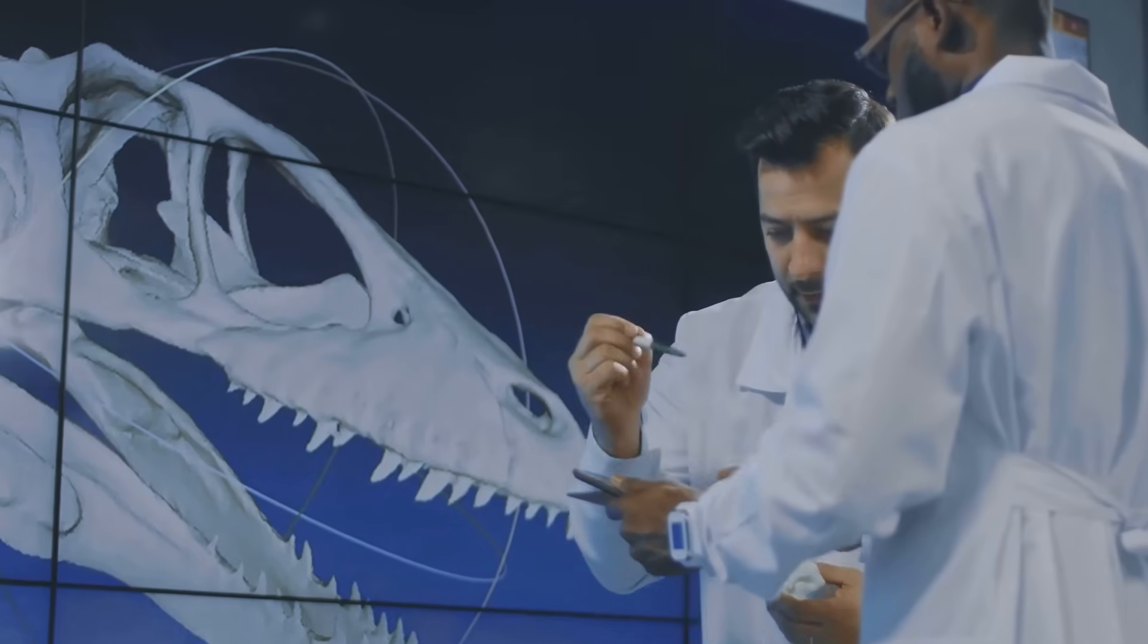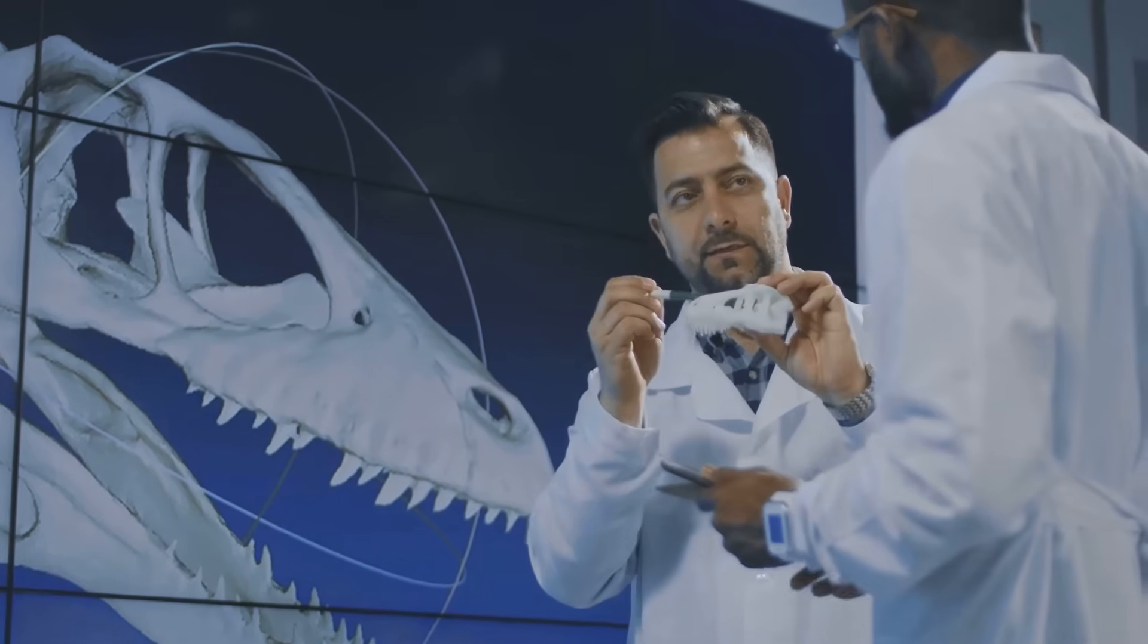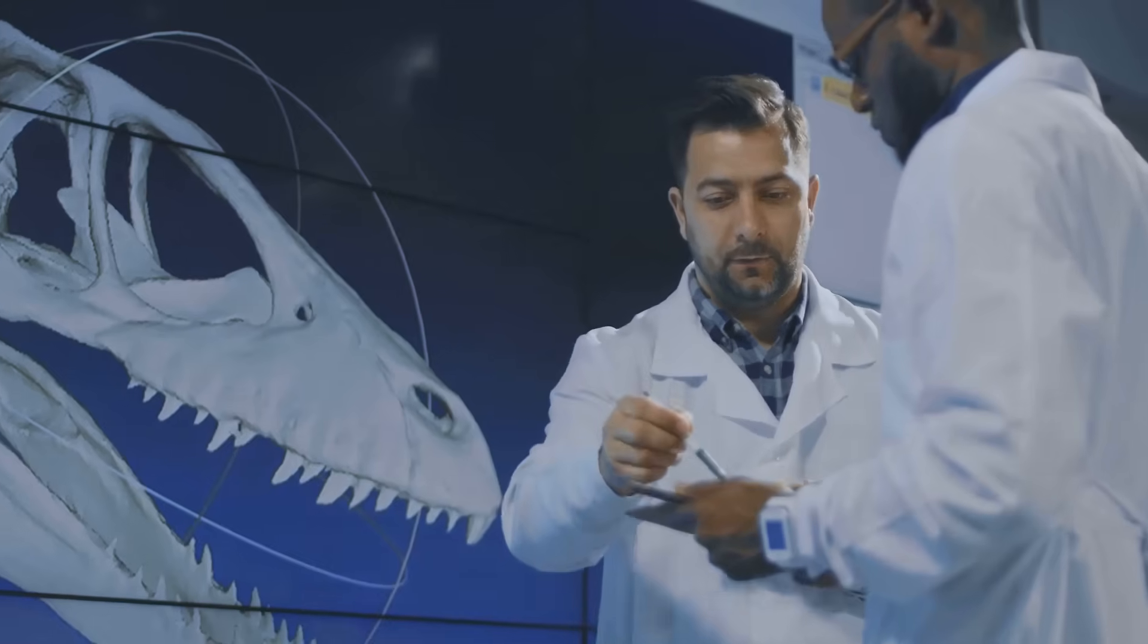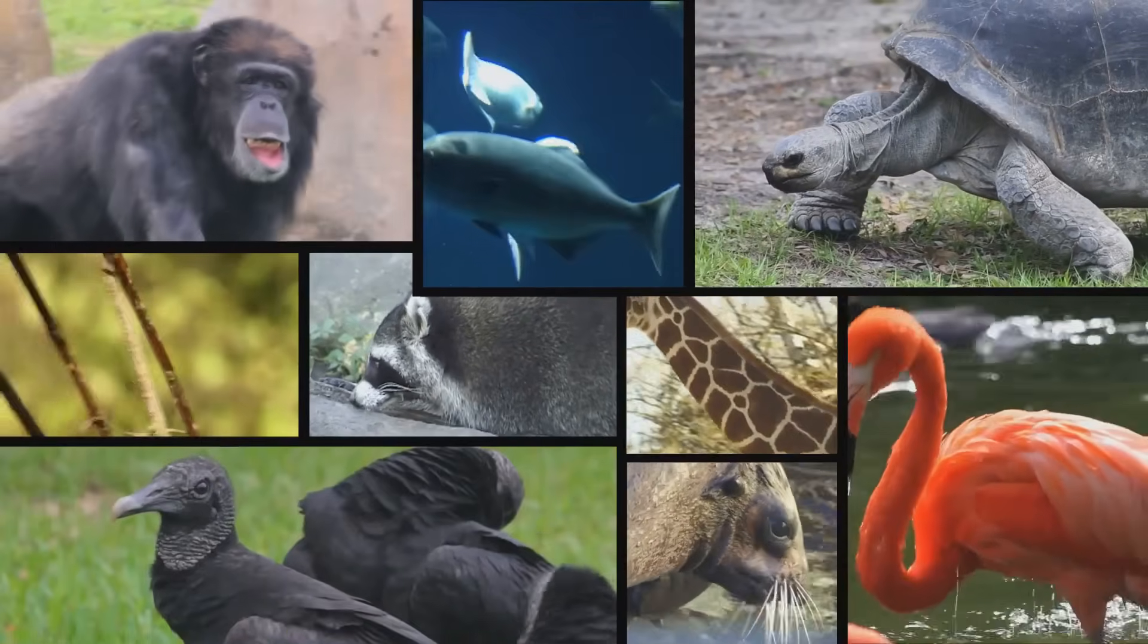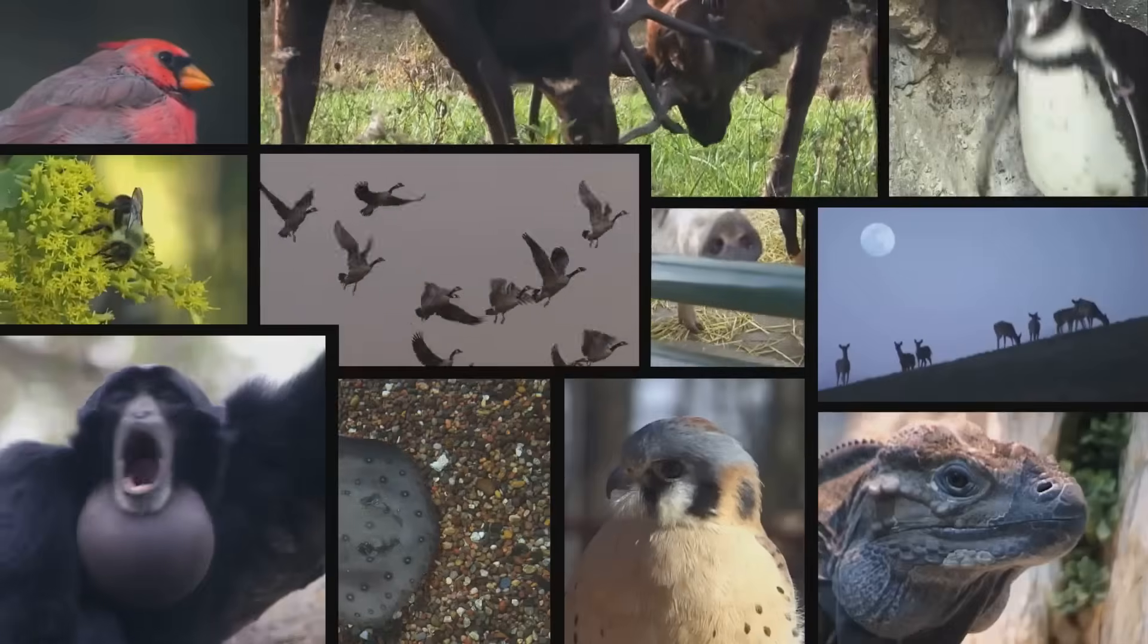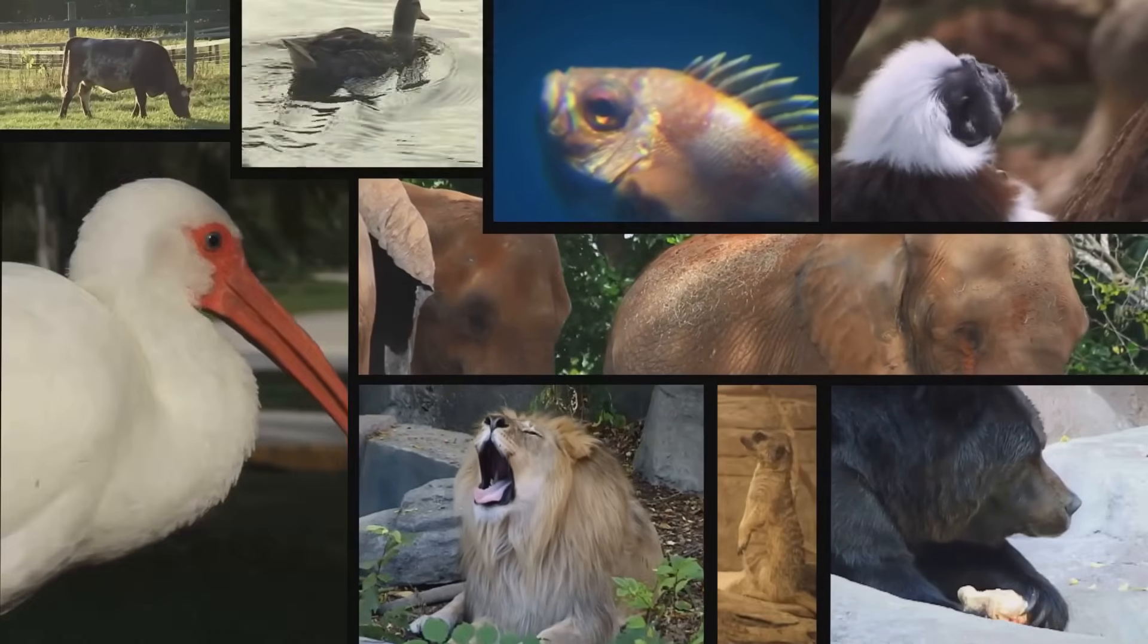Similarly, scientists use the theory of evolution to explain the crime of how life has diversified on Earth, with the evidence scattered across the planet and through time. Understanding the distinction between fact and theory, and appreciating the robust evidence supporting the theory of evolution, allows us to appreciate the true grandeur of life's journey on Earth.